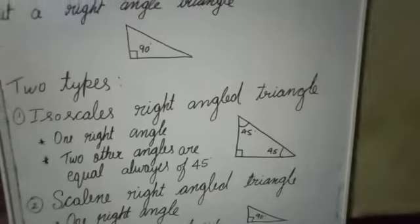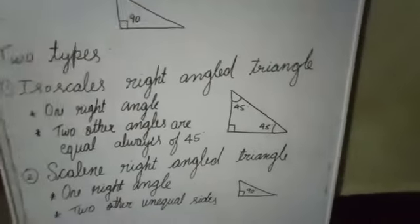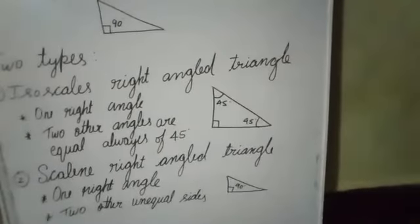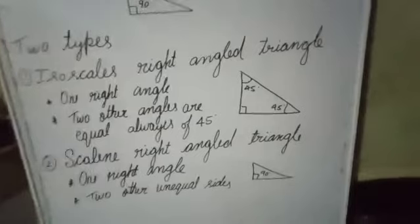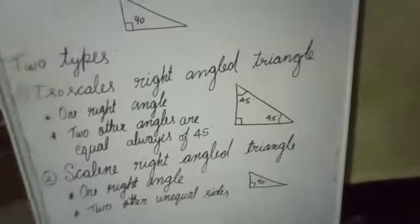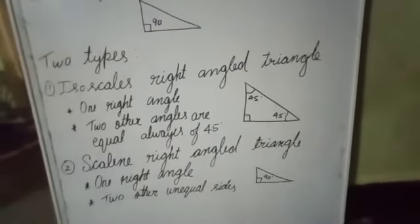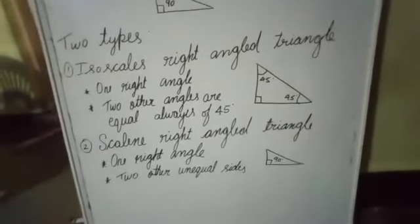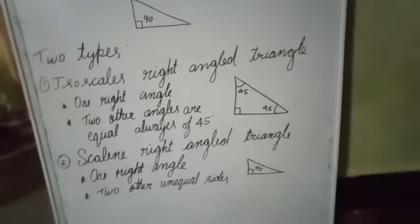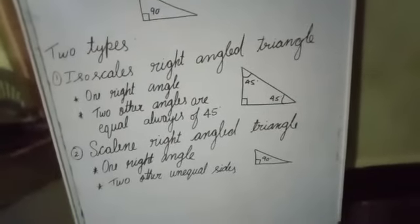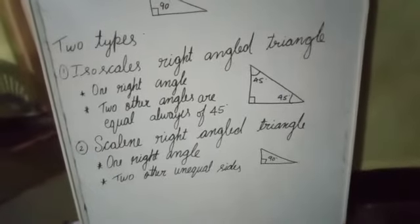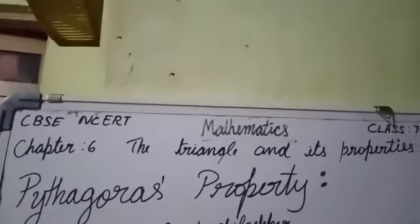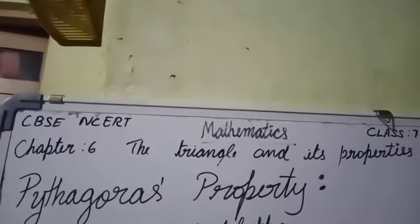The second type is the scalene triangle. A scalene right angle triangle is also a 90-degree right angle triangle, but the two other sides are unequal. In the isosceles, two angles are the same at 45 degrees, but in the scalene, the sides are unequal. So there are two types of right angle triangle: one is the isosceles right angle triangle and the other is the scalene right angle triangle.